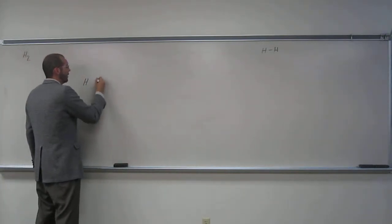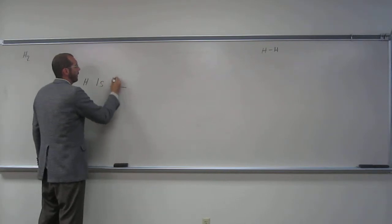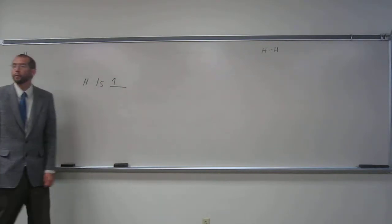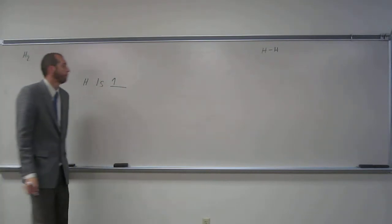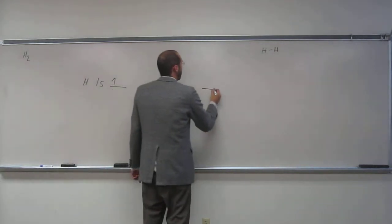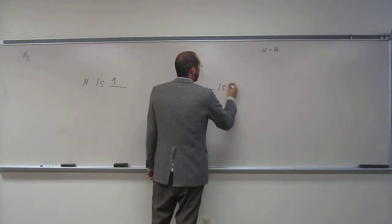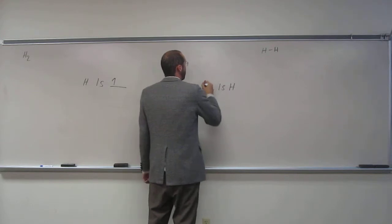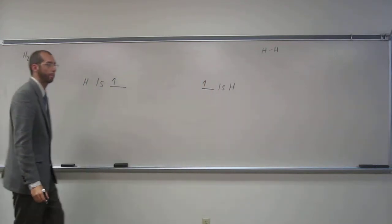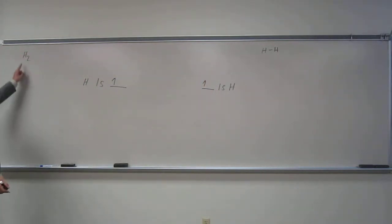So hydrogen, 1s orbital, one electron, like that. Is everybody okay with that? On the other side, we have a 1s orbital and a hydrogen with one electron, like that. So that gives us H plus H equals H2, right? Is everybody okay with that?